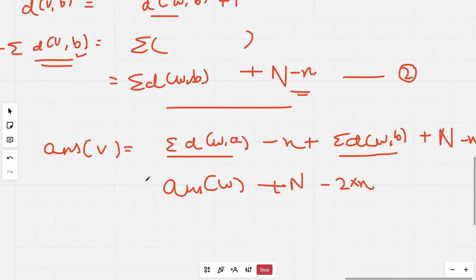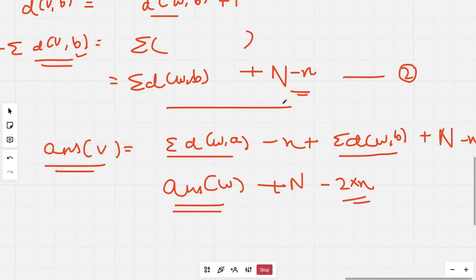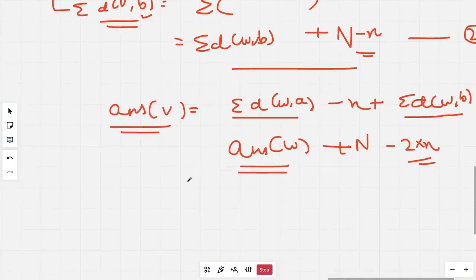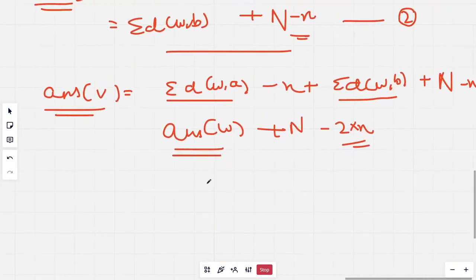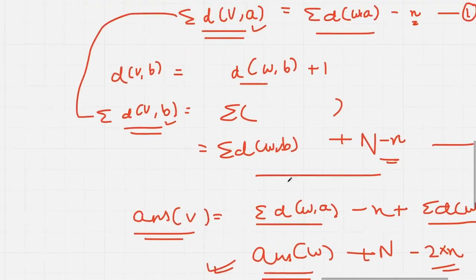This proves that the answer of v only depends on the answer of the parent plus the size of the subtree. That's why we only need to calculate the answer for the first node, and for all the rest of the nodes we can calculate it just from the answer of the parent.